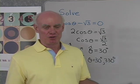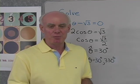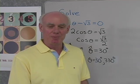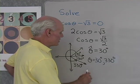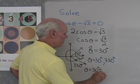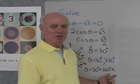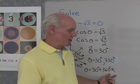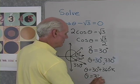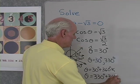Now suppose I want to write all solutions. I only have two between 0 and 360, and I can add any multiples of 360 to those to get coterminal angles with the same cosine. So all solutions are: theta equals 30 degrees plus 360 degrees times k, where k is any integer (0, plus or minus 1, plus or minus 2, and so on), and theta equals 330 degrees plus 360 degrees times k.